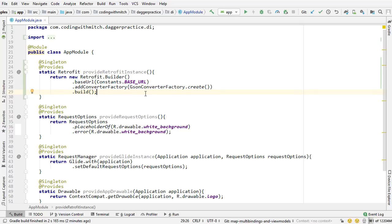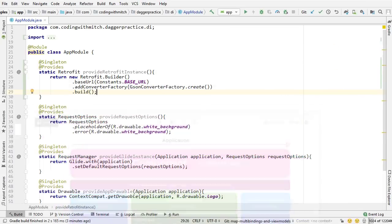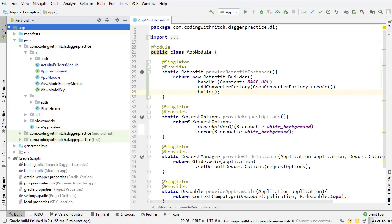Next, if you're familiar with Retrofit, is building an interface that holds the methods for accessing the API. Your first thought might be to put that in the app module, but looking at our diagram, we want to keep everything as separated as possible. The app component should only contain dependencies needed for the entire application. Other subcomponents will contain dependencies unique to them. The authentication methods are only really needed inside the auth component, so we're going to create that interface inside a subcomponent as a subcomponent dependency — that's one of the cool things about Dagger.